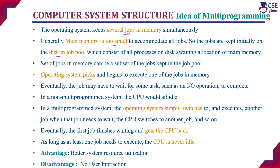During execution, whenever a particular job has to wait for some IO operations or any other operations, the CPU would otherwise sit idle. But in a multi-programming environment, the operating system simply switches to and executes another job. When the executing job needs to wait for IO operations, the CPU switches to another job and so on. Eventually, when the first job completes its operation, it gets back the CPU again. As long as at least one job needs to execute, the CPU will never sit idle.